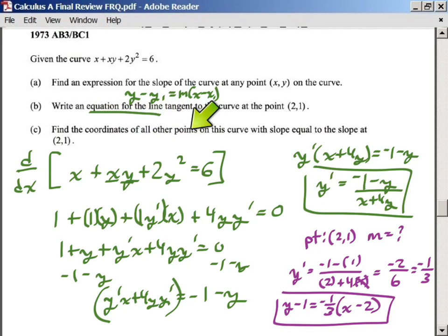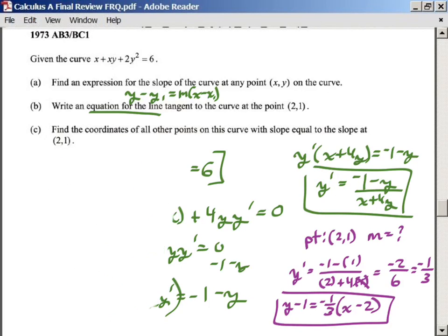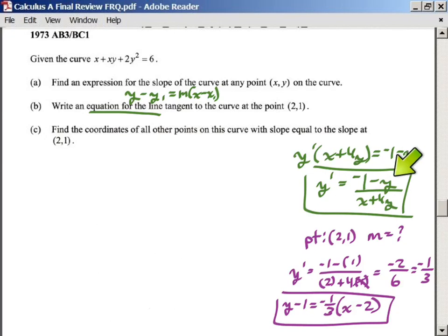The next question says, find the coordinates of all other points in this curve with the slope equal to the slope at this one. Okay, so it's important that we get the right slope here because then we wouldn't be able to do this. We've got to find all of the points that have a tangent line that has a slope of that. So let's give ourselves some space by erasing things.